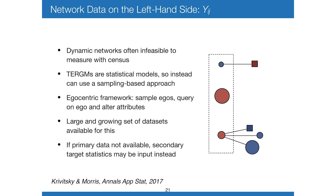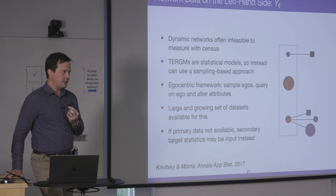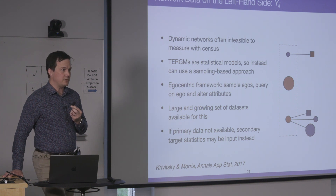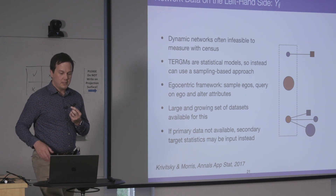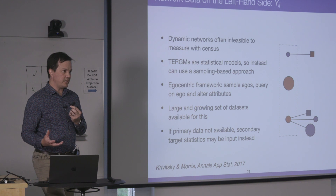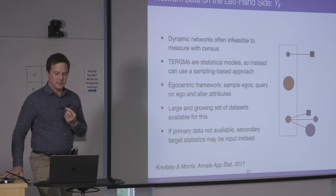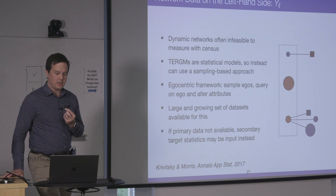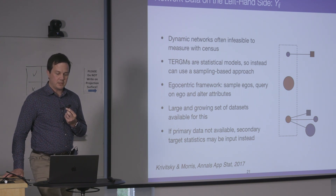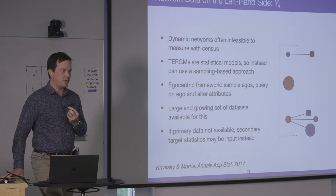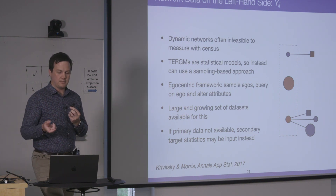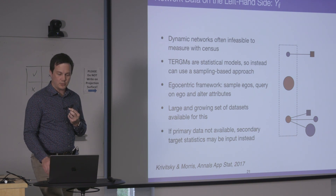The network data we feature in network-based epidemic models varies, and we use a combination of primary and secondary data. A lot of work in my group goes out and collects primary network data specifically for these types of models. We use an egocentric network framework — we go out into the world, sample egos, and ask people about their contacts, both about features of the contacts and features of the partnerships themselves: edge-level covariates and nodal-level covariates.